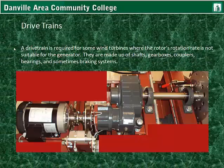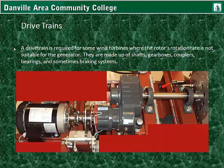A drivetrain is required for some wind turbines where the rotor's rotation rate is not suitable for the generator. Drivetrains are made up of shafts, gearboxes, couplers, bearings, and sometimes braking systems.